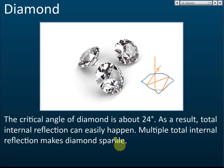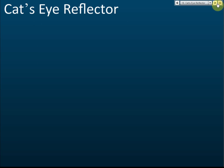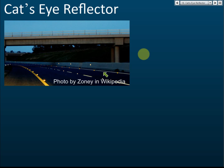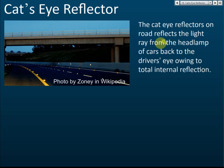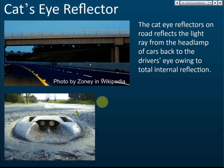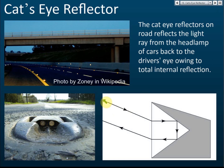Cat's eye reflector: cat's eye reflectors on the road reflect light rays from a car's headlamp. When you drive and your headlamp hits the reflector, the light is reflected back to the driver's eye owing to total internal reflection. The light enters the cat's eye reflector, undergoes total internal reflection multiple times, and goes back to the driver's eye. The driver sees it as a light source, but actually there's no lamp — the light comes from the car's own headlamp.